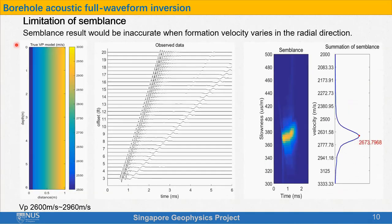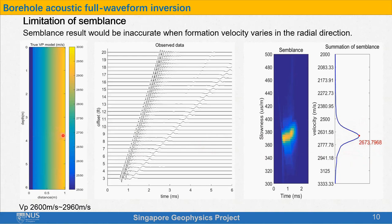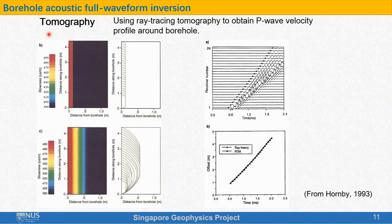However, semblance results would be inaccurate when formation velocity varies in the radial direction. In this example, P-wave velocity is changing from 2600 meters per second at the wellbore to around 3000 meters per second one meter away from the wellbore. The semblance result would just give a somehow averaged number. From the semblance result, we could not know the structure of the velocity model.